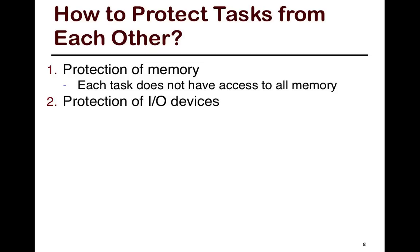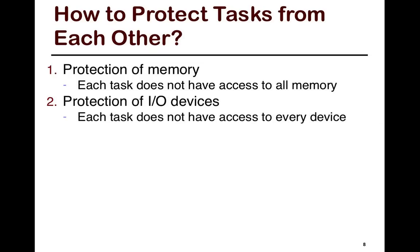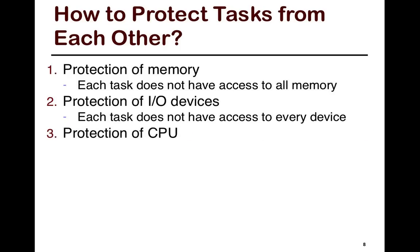There's also protection of I/O devices. How do you make sure that when two tasks issue print jobs to the printer at the same time, you don't get garbled output? Each task should look like it has exclusive access to the device. Furthermore, some devices shouldn't be accessible to all tasks — for example, if a browser can arbitrarily print things to the printer connected to your machine, then a lot of bad things can happen.